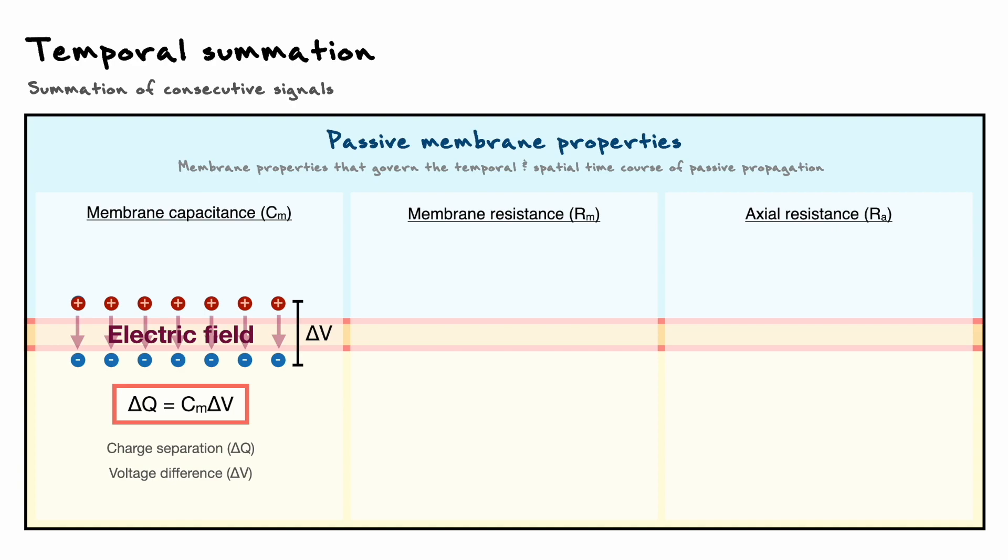Another consequence of charge separation is the fact that when charges enter the neuron, here in this instance positive charges, it causes charges on the opposite side to feel a repulsion and move away. This charge movement creates a current which we've called the capacitive current IC.